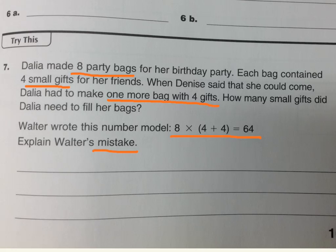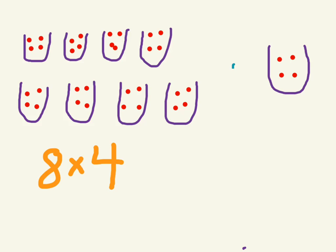So Dalia made 8 small bags. Here are her 8 bags. And inside each bag she put 4 gifts. So let's put 4 gifts in each bag. So those of you familiar with multiplication number stories would know here we have 8 bags and 4 things, and each bag would be 8 times 4. Okay. Then what happened, this girl Denise said she can now come. So Dalia has got to make one more bag with 4 gifts. So there's the one more bag for Denise. So we have these 8 with 4 gifts plus one more bag with 4 gifts.